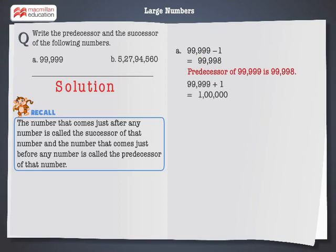And to find the successor of 99,999, add 1 to it. We get 1 lakh. Hence, the successor of 99,999 is 1 lakh.